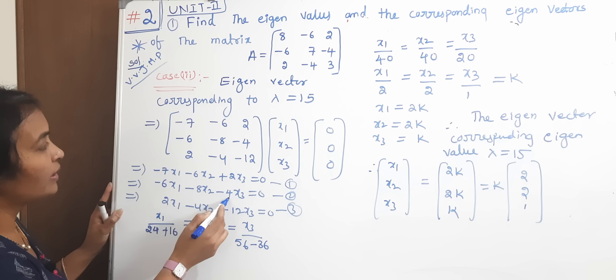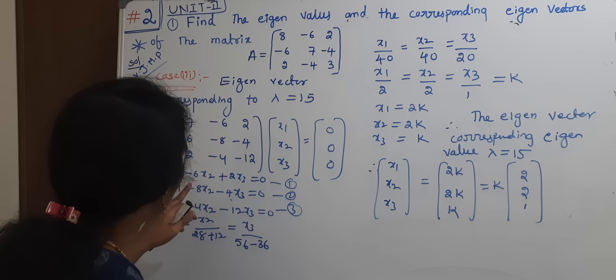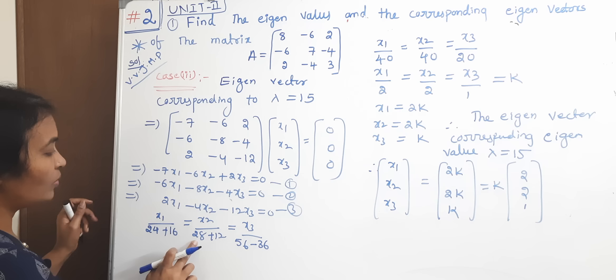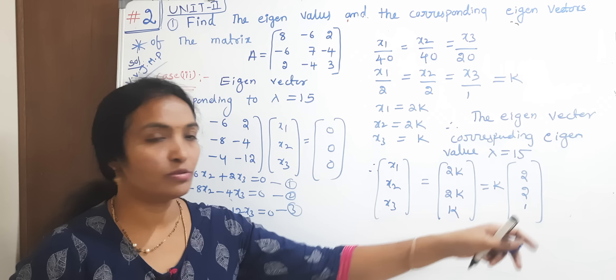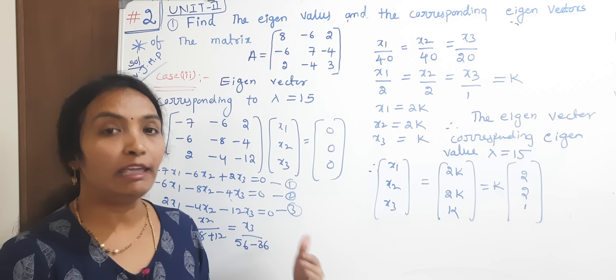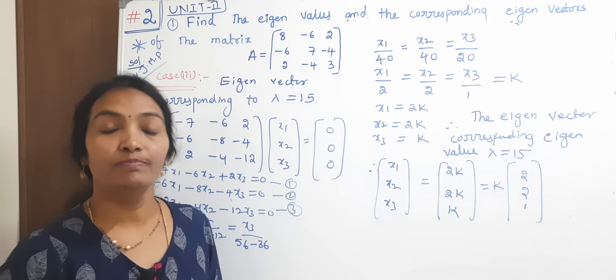We can verify: checking the equations confirms the eigenvector [2, 2, 1] is correct for lambda equal to 15. This is the eigenvector. The cross multiplication method was used throughout to find all eigenvectors. Next we will solve eigenvectors using the echelon form method. Thanks for watching — like, share, and subscribe.